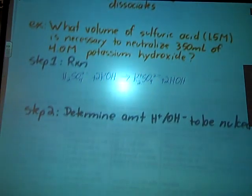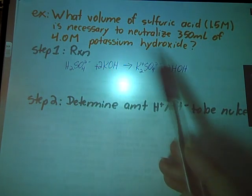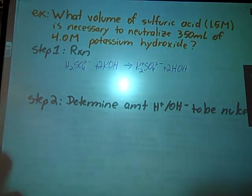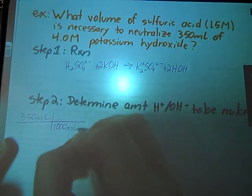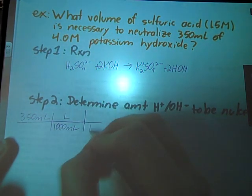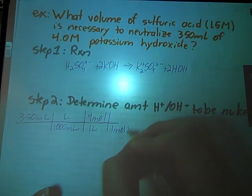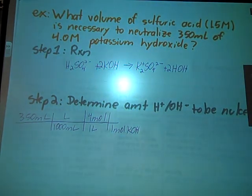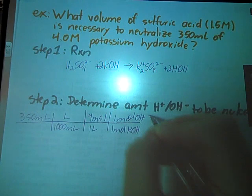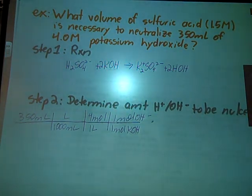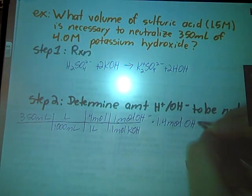Next, determine the amount of H plus or OH minus to be nuked. We're talking about 350 mL of potassium hydroxide. So just that hydroxide right there. I have 350 mL. I don't want milliliters, I want liters. And it's in a 4 molar solution, but that's for potassium hydroxide. I don't want potassium hydroxide. I want hydroxide. But luckily, still 1. Multiply all the way across the top, divided by all the way across the bottom, and we find out that we have 1.4 moles of that OH floating around.